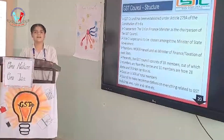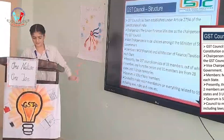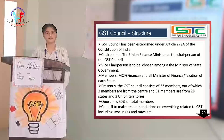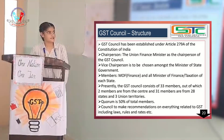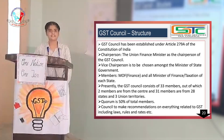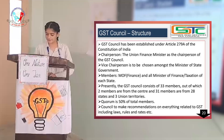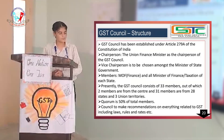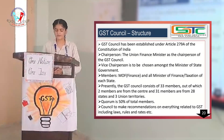Today I am here to present the topic: GST Council Structure. The GST Council has been established under Article 279 of the Constitution of India. The Chairperson is the Union Finance Minister. The Vice Chairperson is elected from among the ministers of the state governments. Members include the Ministry of Finance and all state taxation ministers.